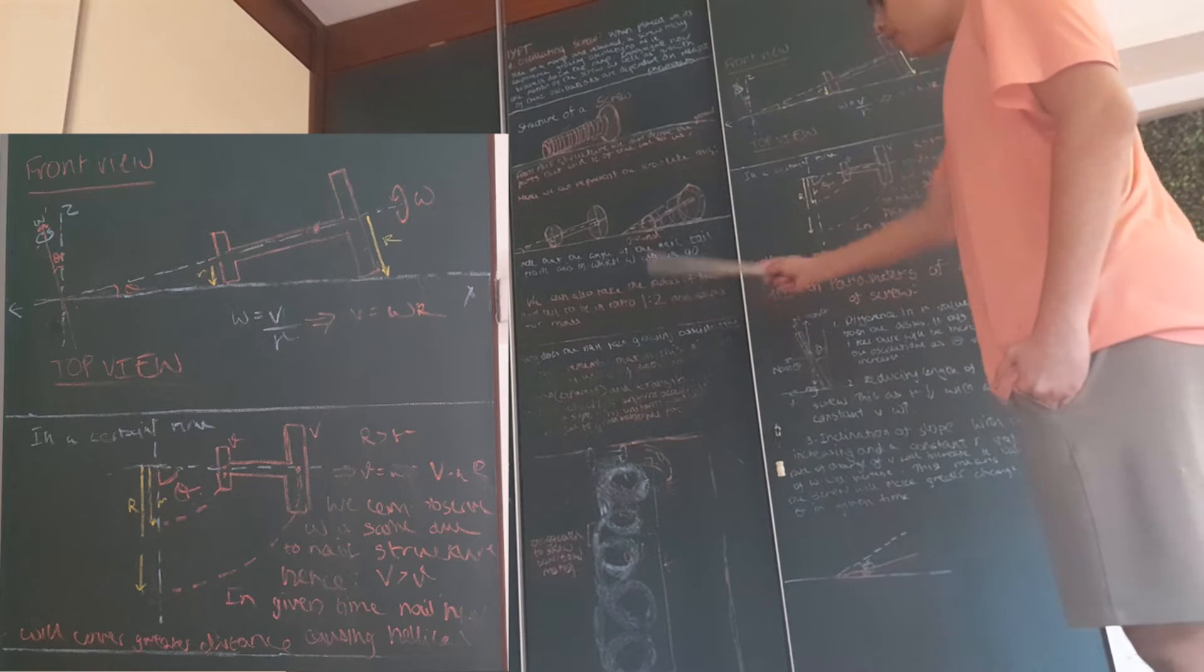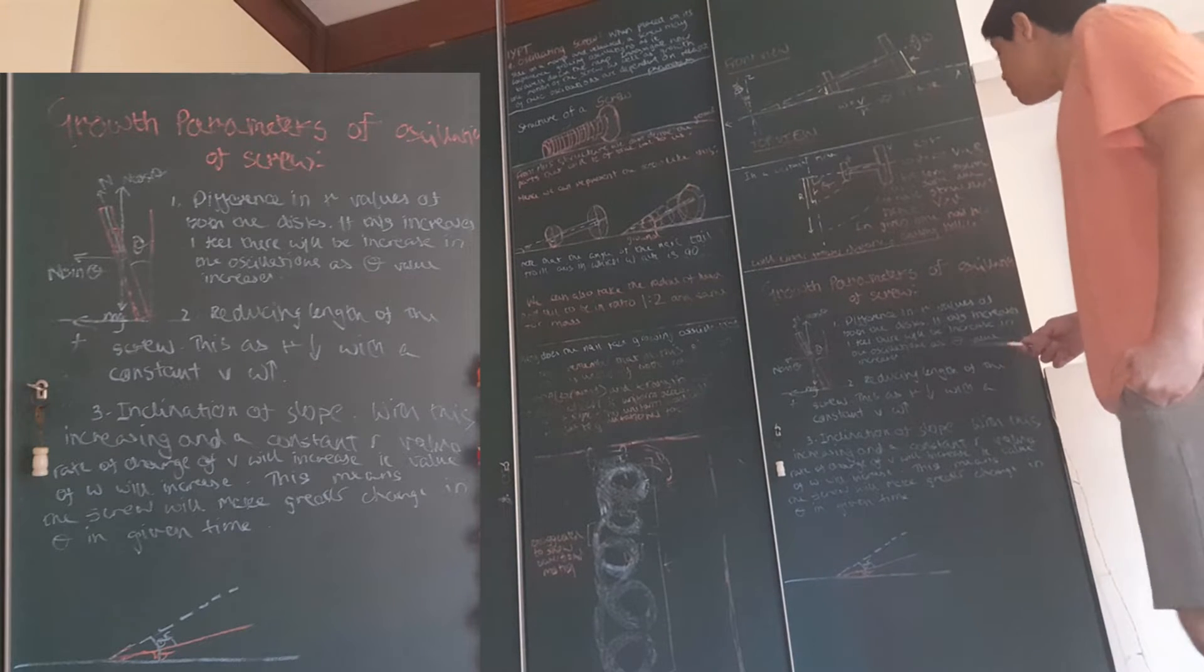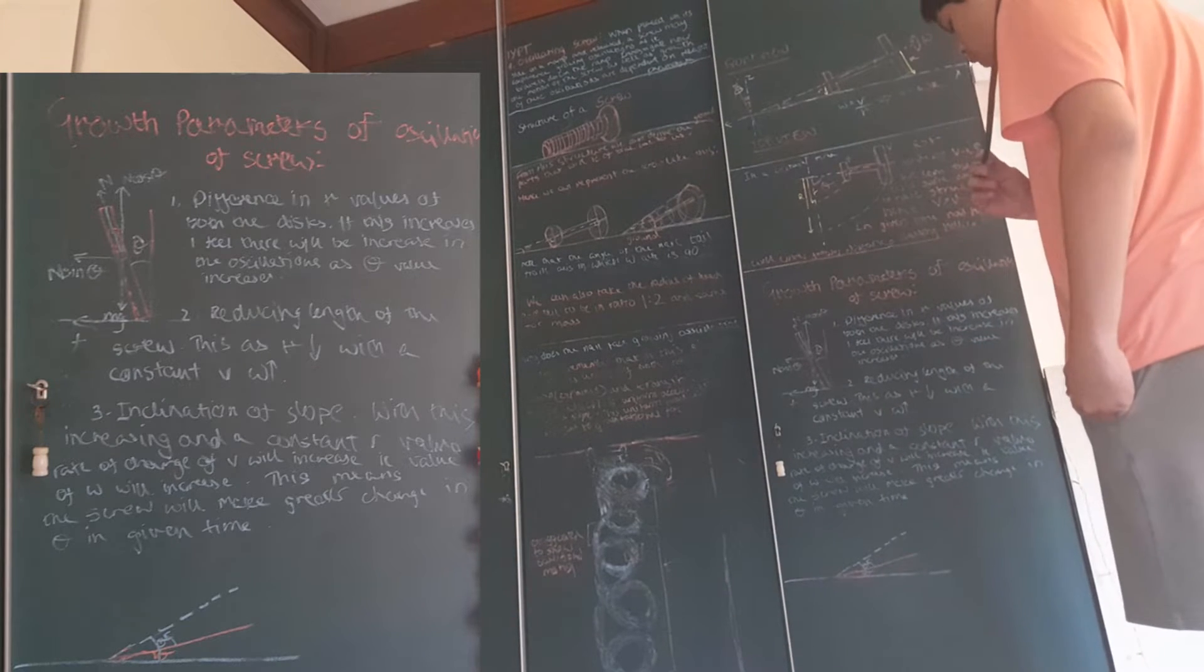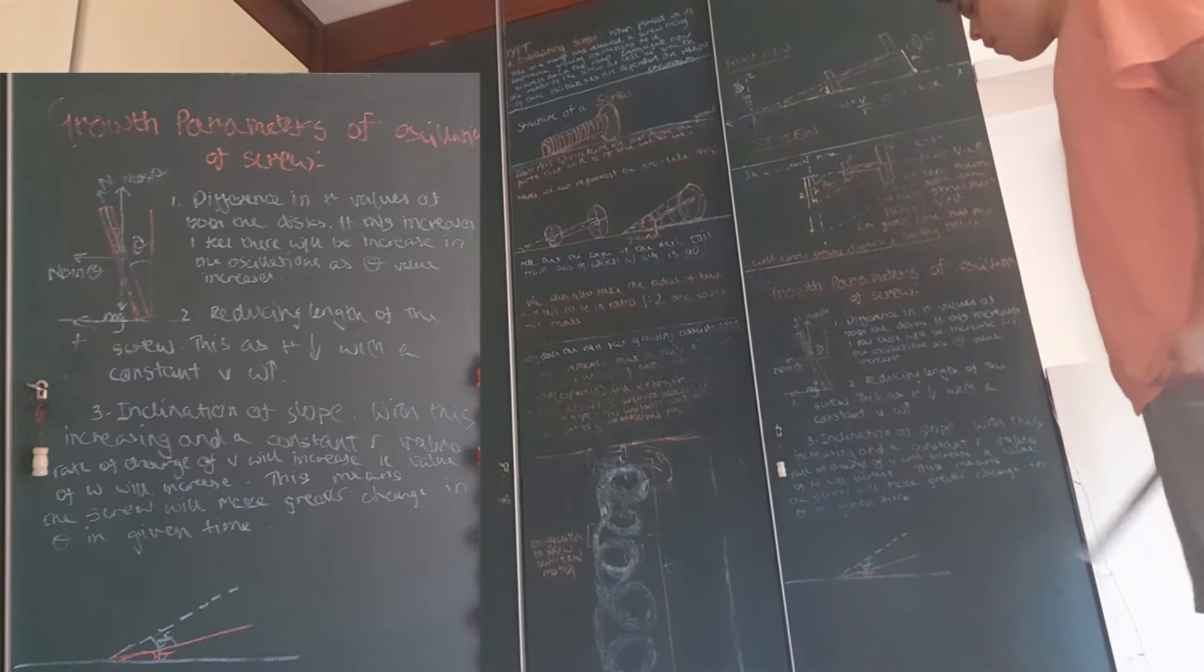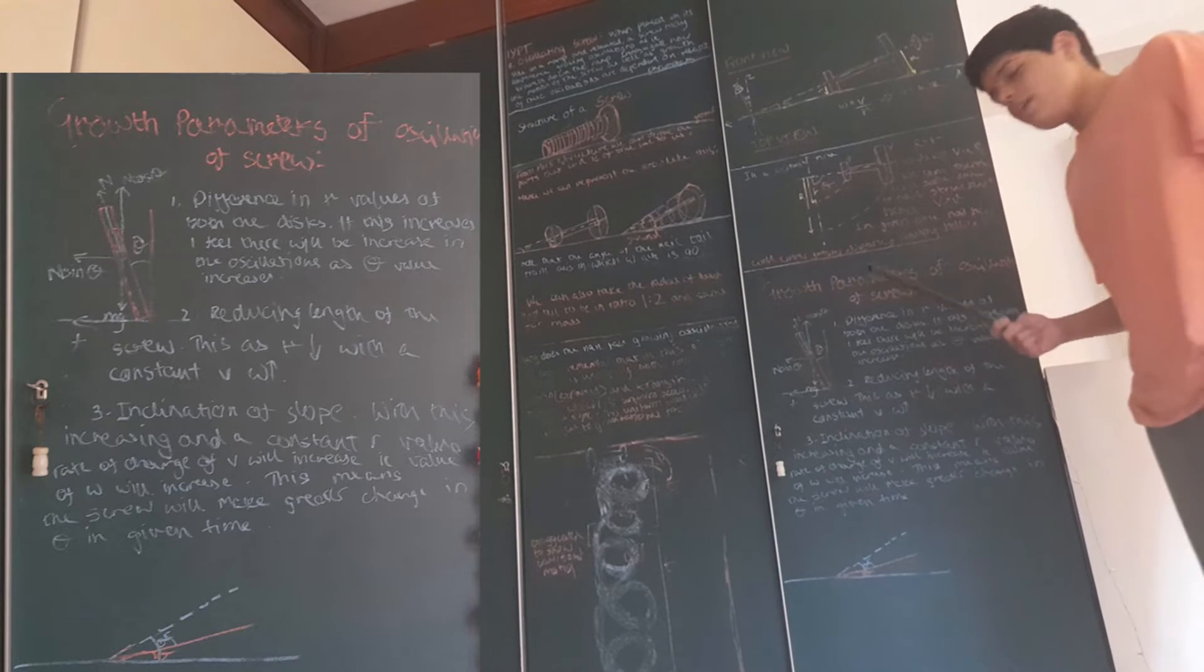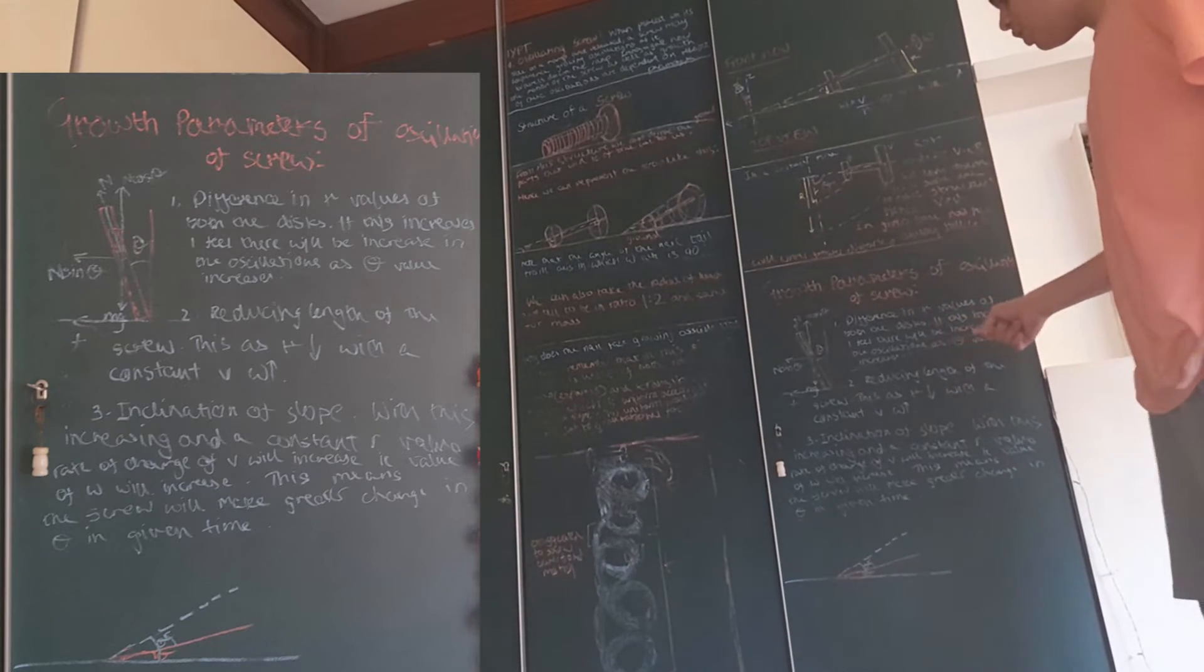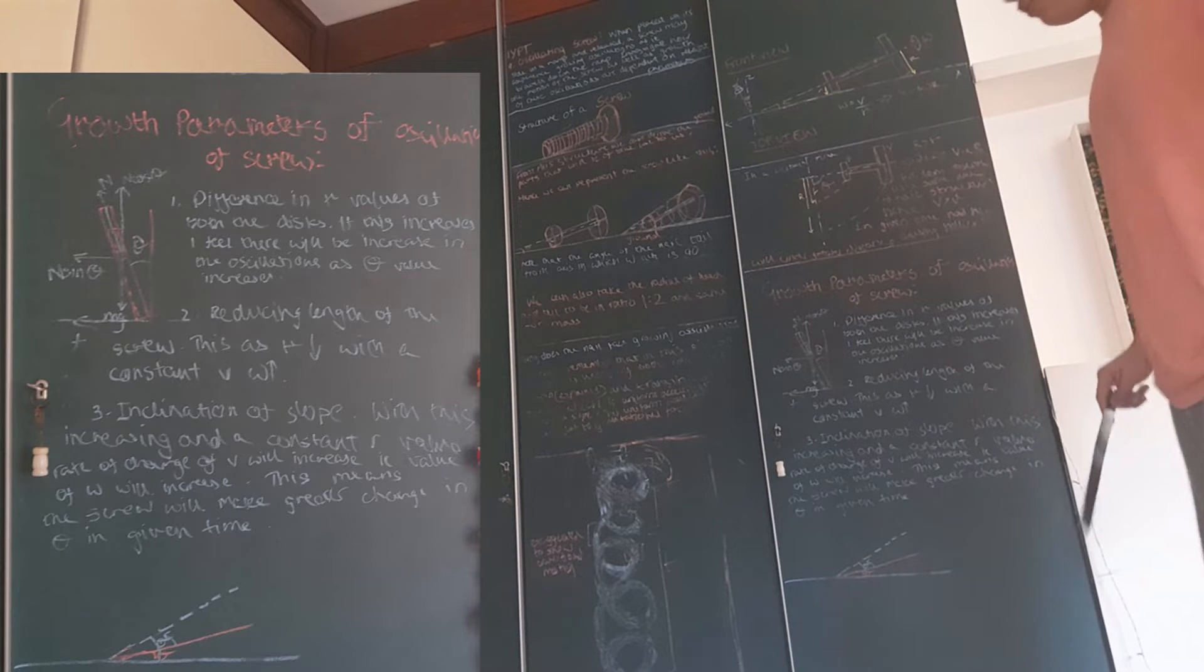That solves this question. Now, let's go to the growth parameters of the oscillation of the screw. Actually, I feel like, again, this formula, we will be using it. You all can just read through the first two, which are also pretty important. But I'll be mainly talking about the third one, which is dependent on, which talks about this value v.